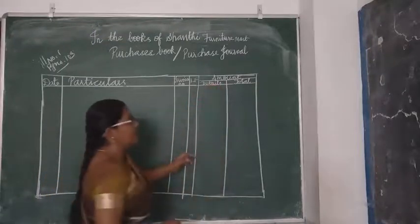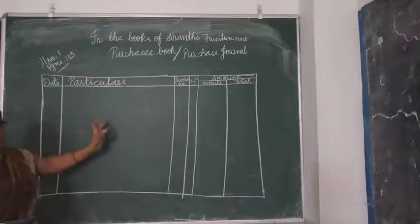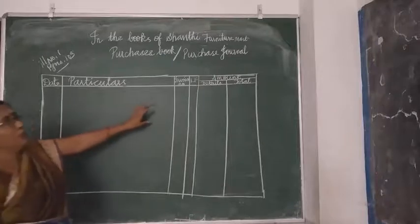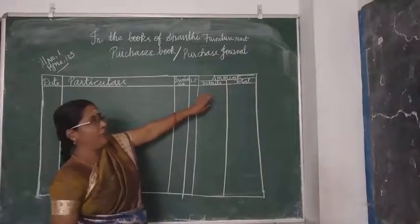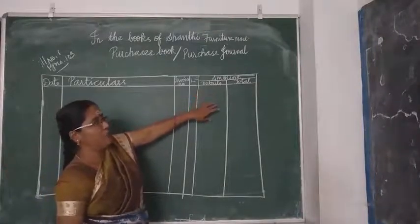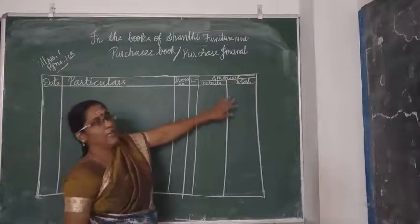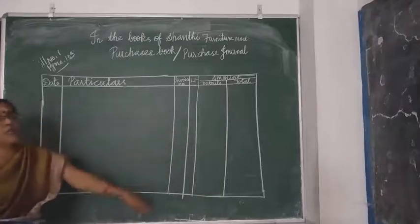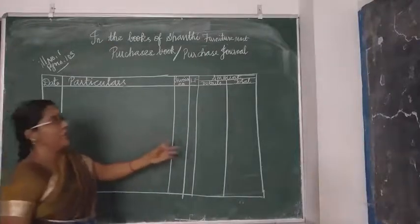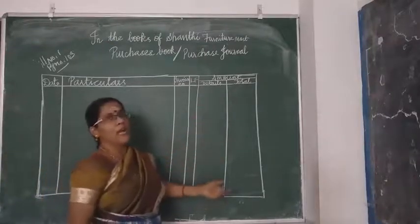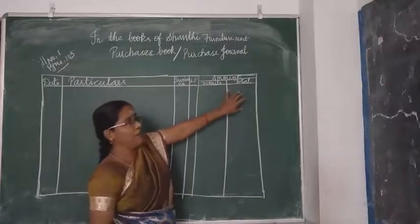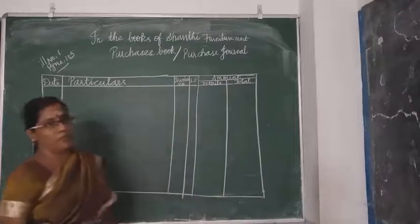Why are we writing the Details column? If there are two or more items purchased — for example, 50 fans at 100 each — each item amount should go in the inner details column, and the grand total alone should go to the outer total column. So details go in the inner column and the aggregate total goes in the total column.